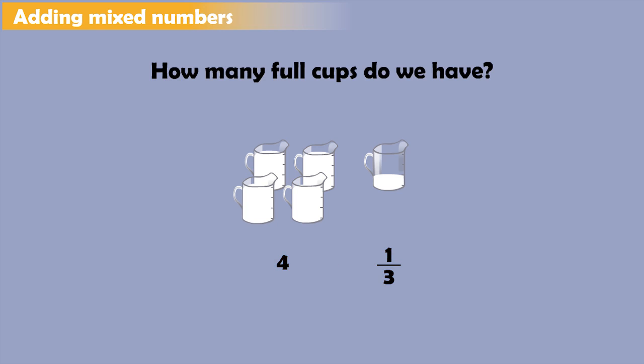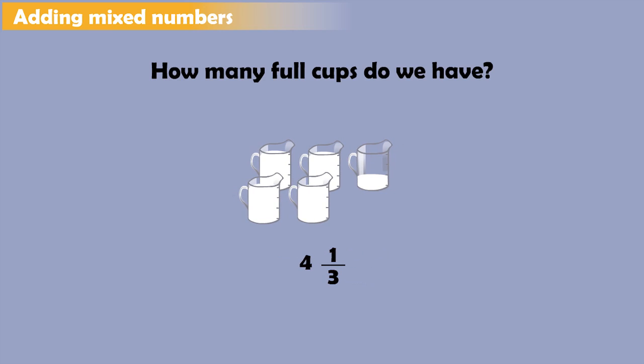We drop the plus sign to make it easier to read. So, Sarah and Lily used 4 cups of sugar and 1 3rd of a cup.